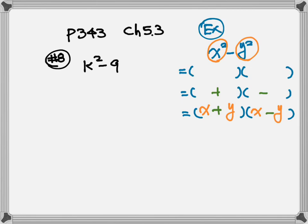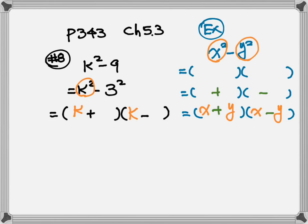Now let's look at number 8. We have k squared, and we're going to change 9 to 3 squared. Now we have square minus square with minus in the middle, so we use the formula: draw two parentheses, one with plus and one with minus. Put k in each one, then put 3 in each one. That's our answer.